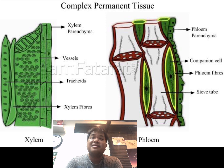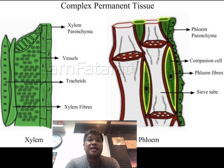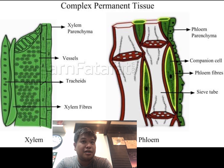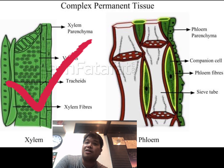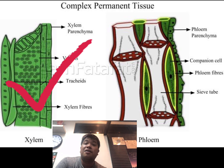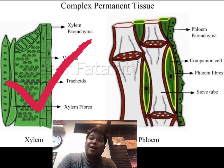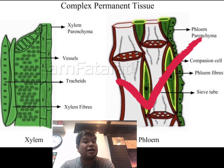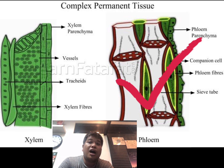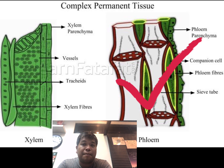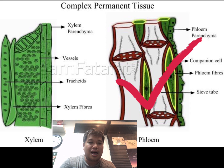And lastly, there are two types of complex permanent tissues in plants: xylem tissue and phloem tissue. The xylem tissue is responsible for the conduction of water and minerals from the roots to the leaves and stem. While the phloem tissue helps in the translocation of food — it is responsible for the transportation of soluble organic compounds made during photosynthesis to parts of the plant.